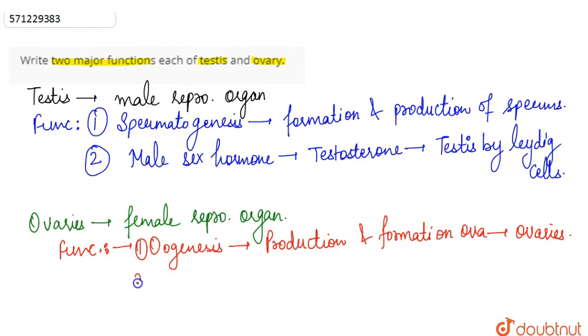And other than this, the second function of the ovaries is that the release of female sex hormones. There are two female sex hormones. These are progesterone and estrogen. So both the female sex hormones are also secreted by the ovaries itself.